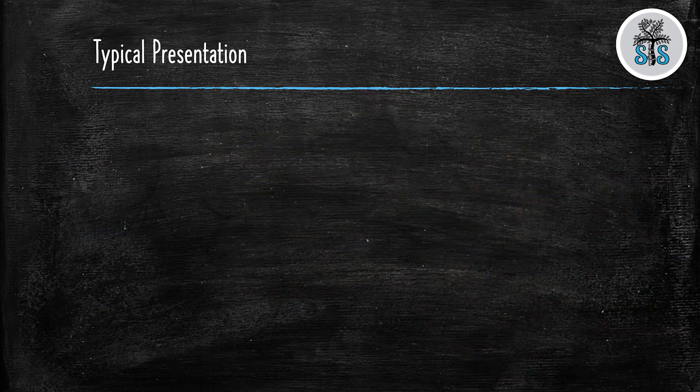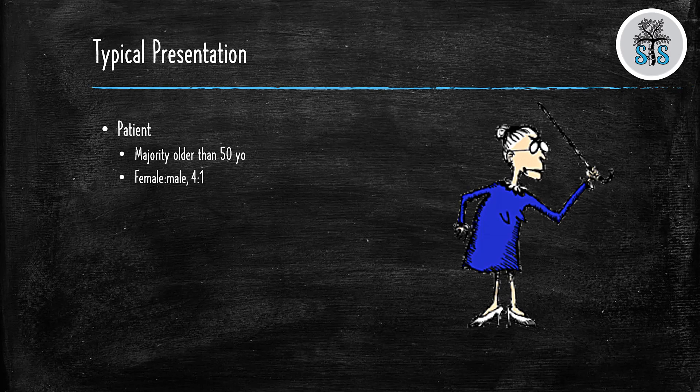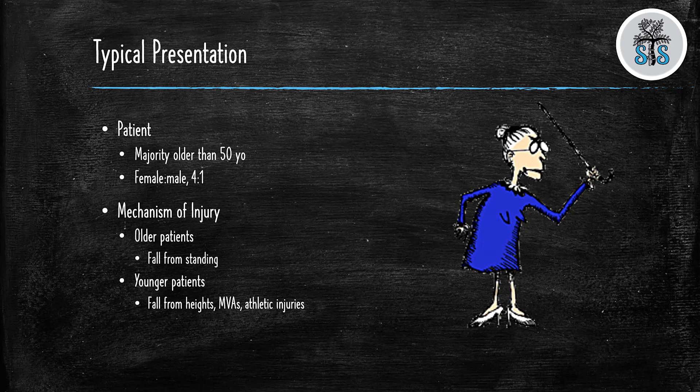What's going to be the typical presentation of the patient that's going to come in? Well, the majority of the time, it's going to be an elderly person, greater than the age of 50, and more often than not, it's going to be a female. Now, the mechanism of injury is very important. Typically, in older patients, it's going to be a fall from standing height. And if this happens in younger patients, it's going to be a fall from a greater height, motor vehicle accident, or athletic injuries. So there's going to be a lot more higher energy to the fracture of proximal humerus in a younger patient than in an older patient.